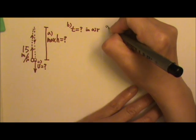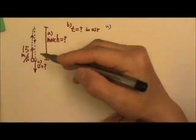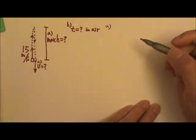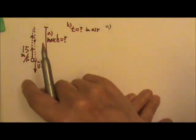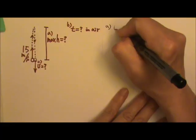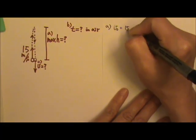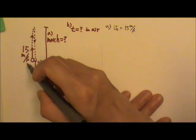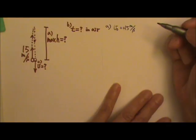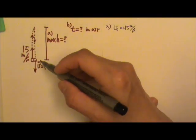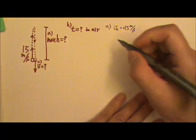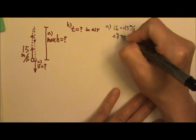For part A, we are only going to the maximum height — only the first part of the motion. Let's list the variables. The initial velocity is 15 meters per second. Since the initial velocity is upward, this is a positive velocity. We are looking for the maximum height, so we are looking for delta y.